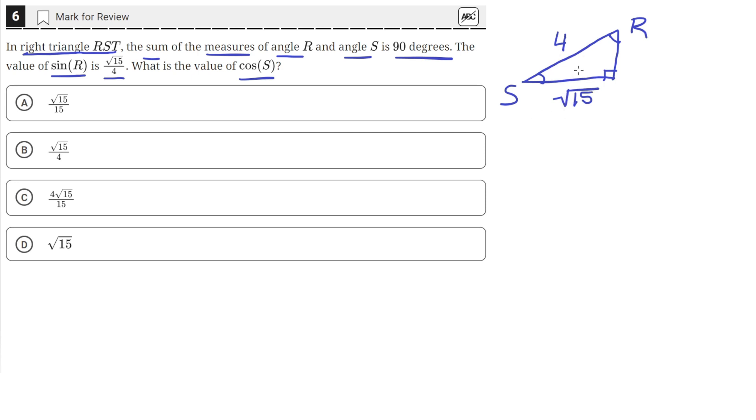Okay, so that gives us two sides of the triangle, but that's all we'll need to find the cosine of S. Because the cosine of an angle is adjacent over hypotenuse. And adjacent to S is the square root of 15, and the hypotenuse to S is the hypotenuse here, which is 4.